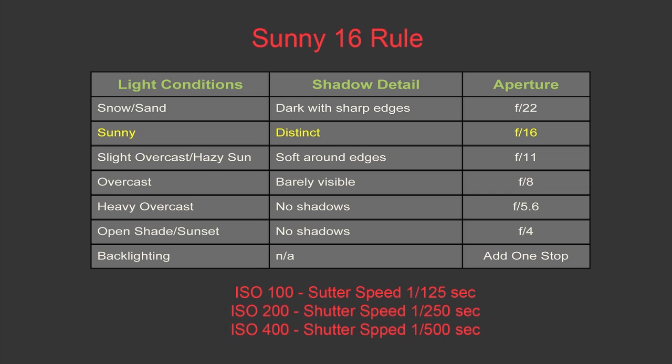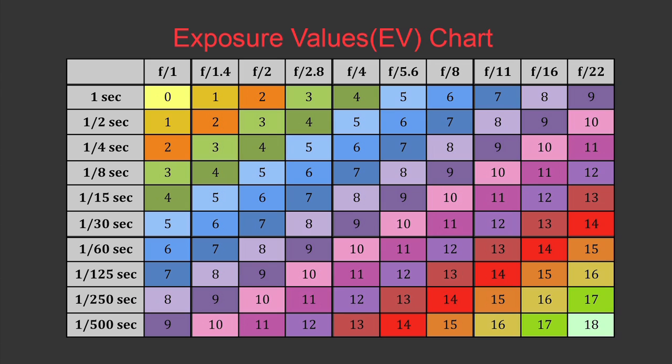When you have a backlit subject, you should add one stop to each of these conditions. And of course, shutter speed will be set to 1 over ISO. So with ISO 100, shutter speed will be 1/125 of a second. With ISO 200, shutter speed will be 1/500 of a second, and so on.